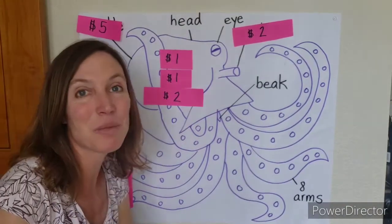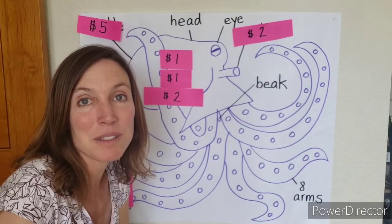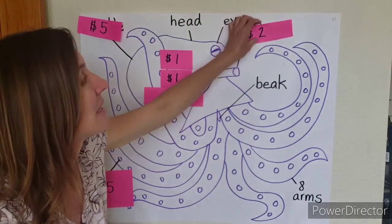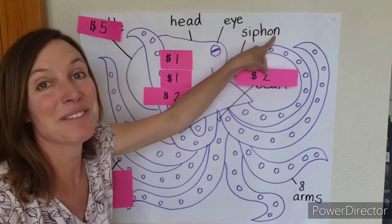What about this thing? This thing takes in water and pushes it out, and that's what helps the octopus to swim. It's called the siphon.